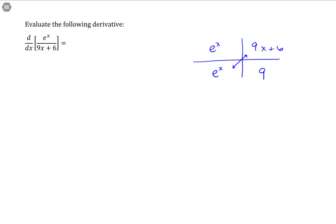So the derivative here is going to be e^x times 9x plus 6 minus 9e^x, all over the original denominator squared.